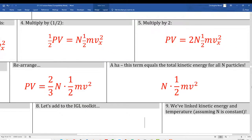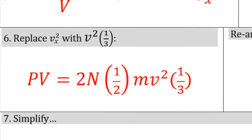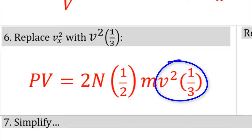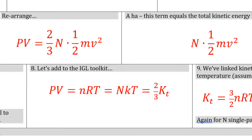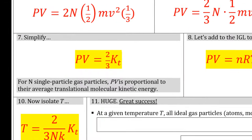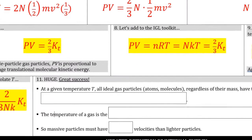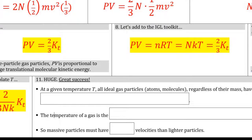In steps 4 and 5, I'm multiplying by one-half and then by 2 in creative ways. In box 6, I'm replacing the x-component of velocity with a general velocity term, no longer restricting myself to a single dimension. After rearranging, I recognize N times one-half mv² — one-half mv² is the kinetic energy for a single particle, so multiplying by N gives the total kinetic energy of all those particles. Box 7 is a pretty big breakthrough: I have an expression for PV, which is a very common product in thermodynamics. Box 8 is a big deal: I can now update the ideal gas law to read PV equals nRT and PV equals NKT, or two-thirds times the total translational kinetic energy of the particles in the container.